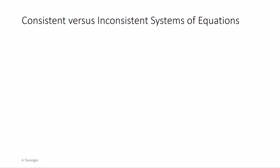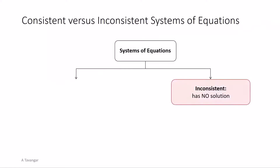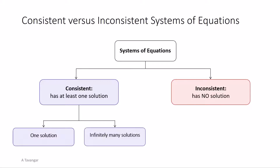Hello everyone. In this quick video we will learn how to determine whether a system is consistent and how to identify the type of solution for consistent systems. A system that has no solution is called inconsistent, whereas a system is consistent if it has at least one solution. Consistent systems can have either one unique solution or infinitely many solutions.